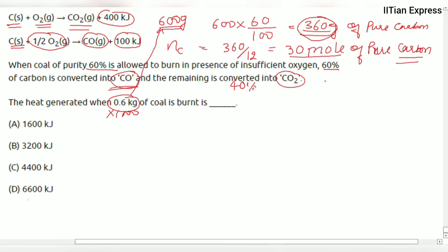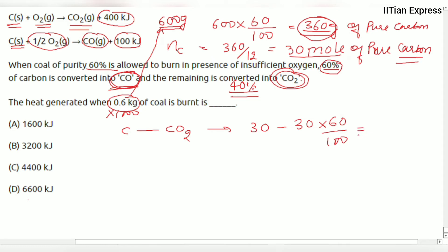60% of the pure carbon converts into carbon monoxide and 40% converts into carbon dioxide. The moles of carbon converting into carbon dioxide is 30 minus (30 × 60/100), which is 30 minus 18, giving us 12 moles converting into carbon dioxide. The moles converting into carbon monoxide is 30 × 60/100, which equals 18 moles.